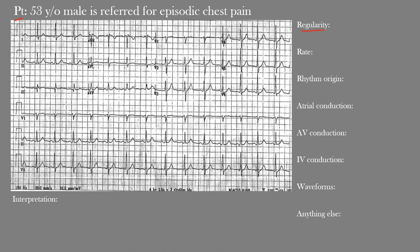The first step is regularity. On first impression, this EKG appears quite regular — this is a regular rhythm. How do we know? We look at the R-to-R intervals. Using calipers or measuring them out, you'd see these intervals are all the same length or duration. Consistent R-to-R intervals throughout — that's what we mean by a regular rhythm.